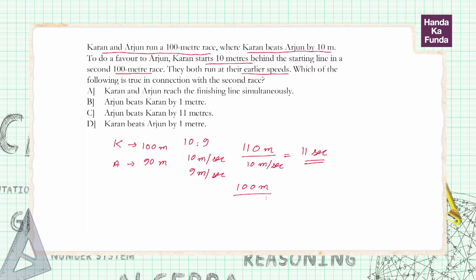does not have to cover any extra distance. He needs to cover the original 100 meters but his speed is slightly less at 9 meters per second. So how much time will he take? 100 by 9 is 11 and 1 by 9 seconds. So who's taking more time? Arjun is